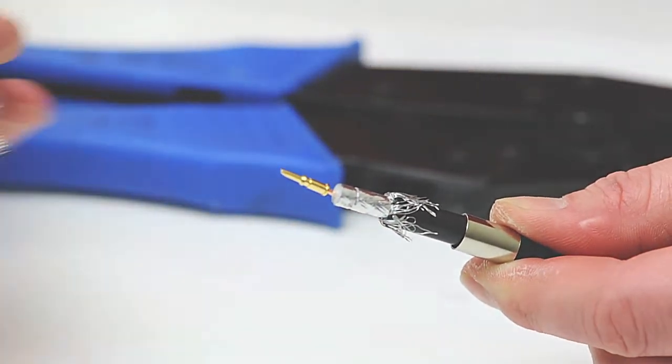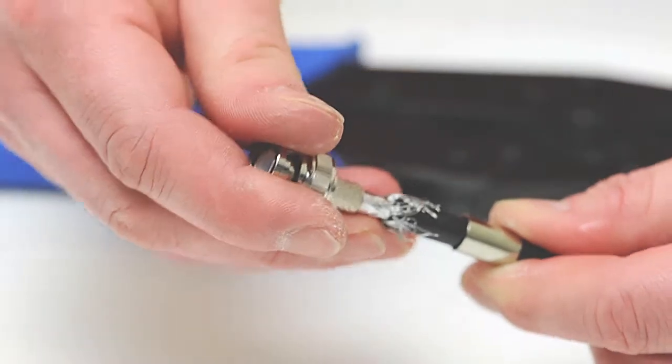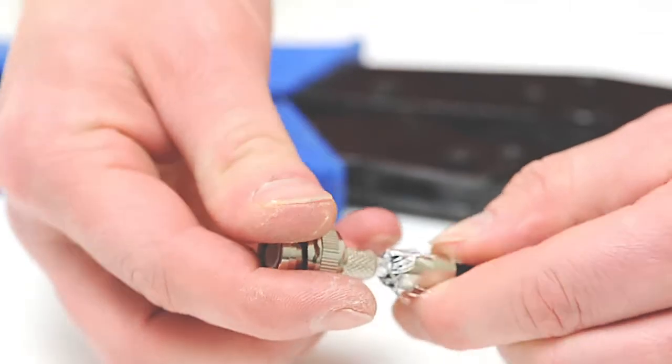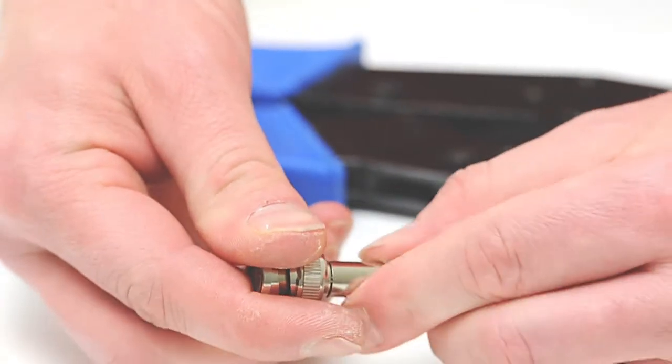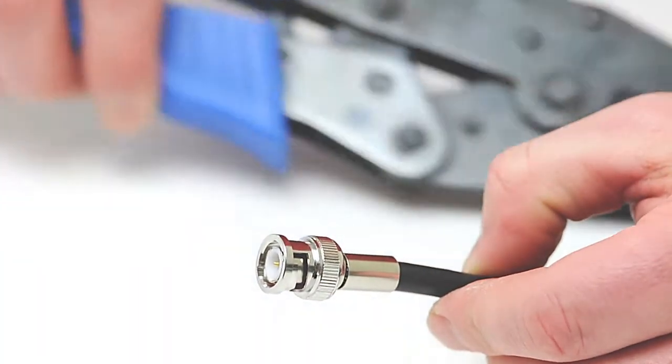Next, take the BNC housing and slide it all the way onto the cable. Slide the ferrule back over the jacket, making sure it holds the braid onto the connector.